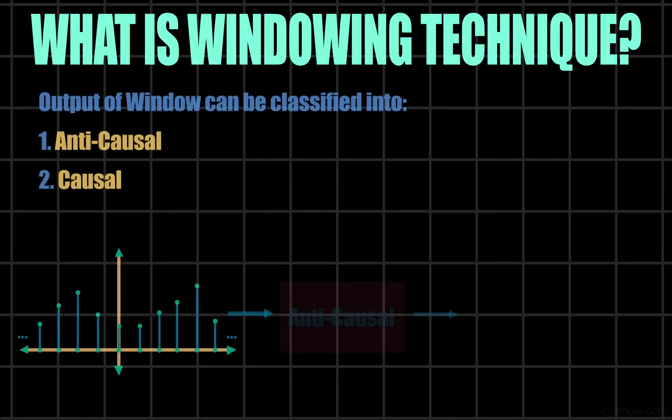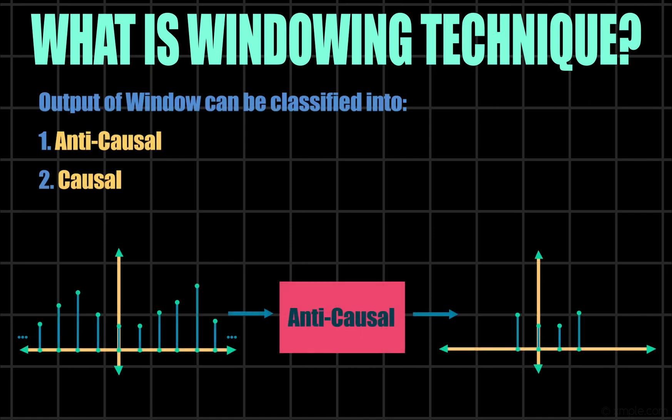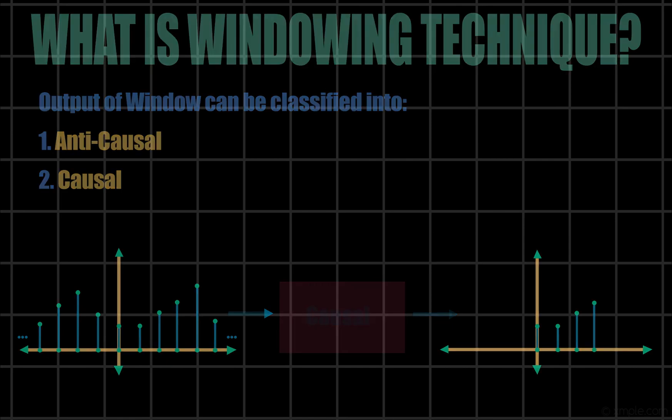A window may give two types of output: anti-causal and causal. Anti-causal when the output has both positive and negative time samples. Causal when the output only has positive time samples.